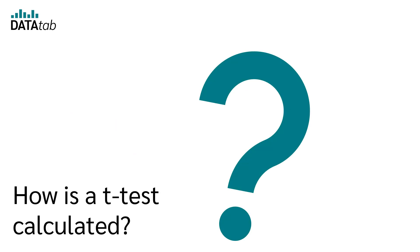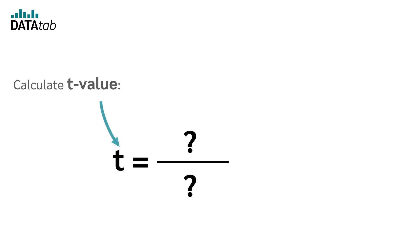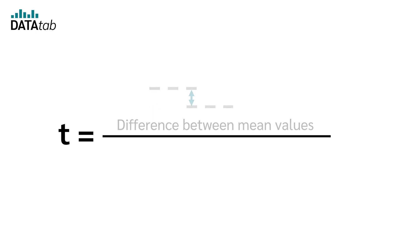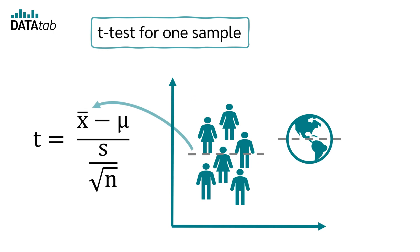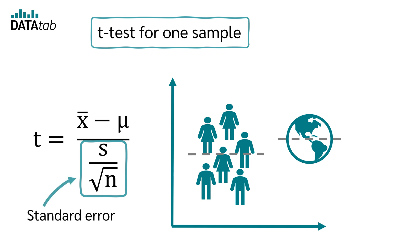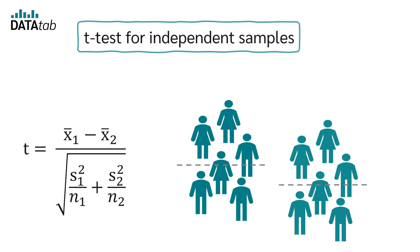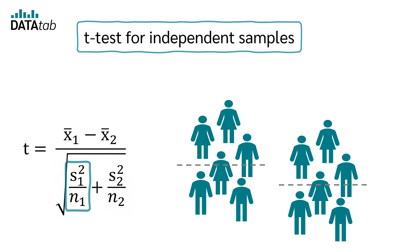But how do we calculate a t-test? To do this, we first calculate the t-value. To calculate the t-value, we need two values: the difference between the means, and the standard deviation from the mean — also known as the standard error. In a one-sample t-test, we calculate the difference between the sample mean and the known reference mean. S is the standard deviation of the collected data and n is the number of cases. S divided by the square root of n is the standard error. In an independent samples t-test, we calculate the difference between the two sample means, and the standard error requires the standard deviation and number of cases from both samples. Depending on whether we can assume equal or unequal variance, there are different formulas for the standard error. In a paired samples t-test, we calculate the difference between the paired values and compute the mean from that; the standard error is then the same as for a one-sample t-test.